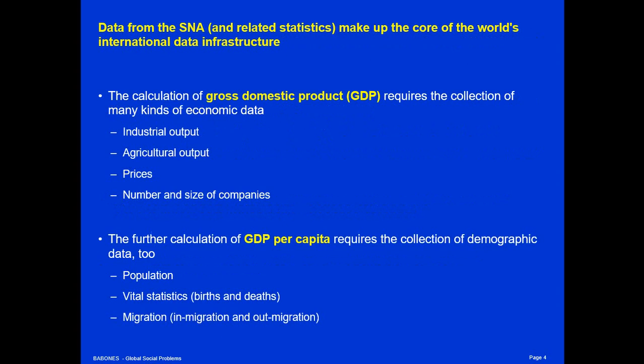Data from the system of national accounts and related statistics make up the core of the world's international data infrastructure. The calculation of GDP requires the collection of so many different kinds of economic data that all of it becomes part of the standard data available in the world — things like industrial output, agricultural output, prices, numbers of companies, size of companies. Every company in a system of national accounts has to report how many employees it has, at what different levels engaged in what kinds of activities.